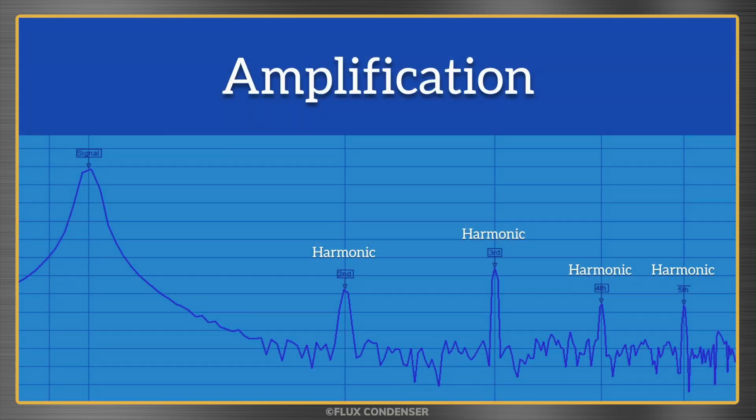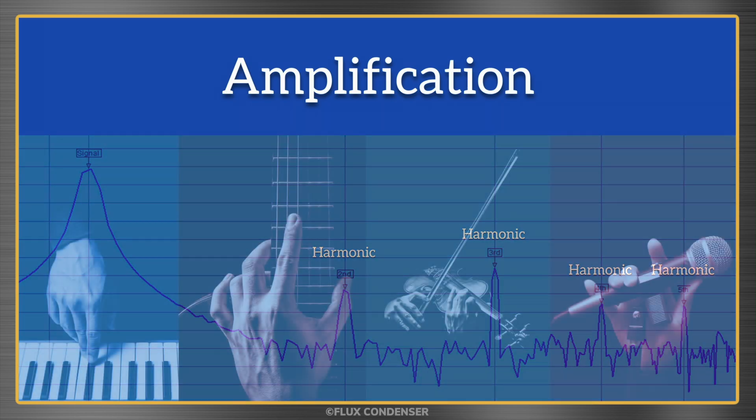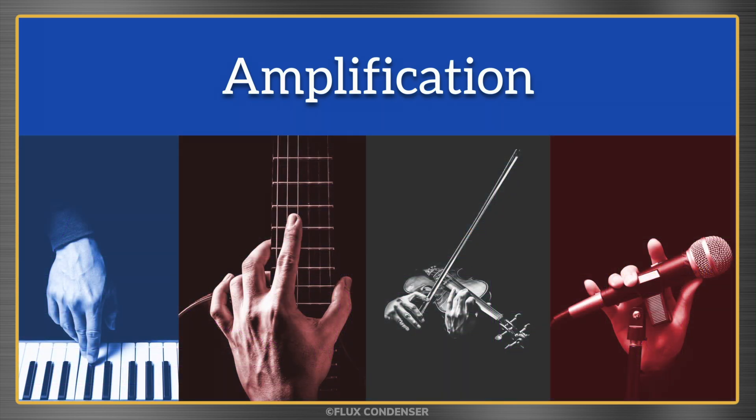Harmonics naturally get generated from the process of amplification, and in fact all instruments create harmonics using their forms of amplification. It's why a guitar sounds different than a piano, even when playing the exact same note.